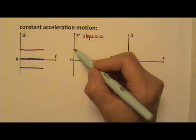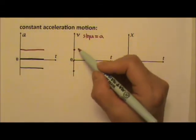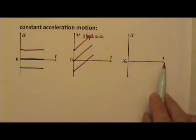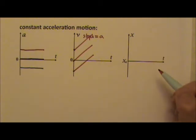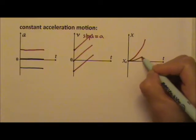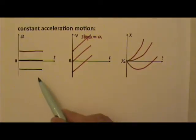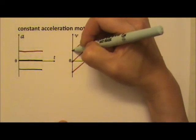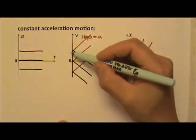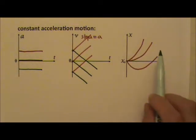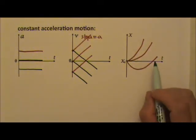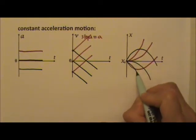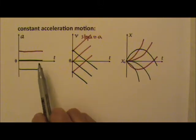Depending on whether your initial velocity is positive, zero, or negative, your velocity graph can take different forms. If your acceleration is positive, the position versus time graph would be an upward curve — it can curve upward in various ways depending on initial conditions. If your acceleration is a negative constant, the velocity graph has a negative constant slope, and the position versus time graph would be some sort of downward curve. If acceleration is a constant zero, that just means you have constant velocity motion.